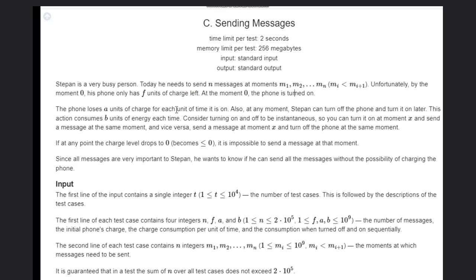The phone loses 'a' units of charge for each unit of time it is on. Also, at any moment Stephen can turn off the phone and turn it on later — this action costs 'b' units of energy each time. Turning on and off is considered instantaneous, so you can turn it on at moment x, send the message at the same moment, and vice versa.